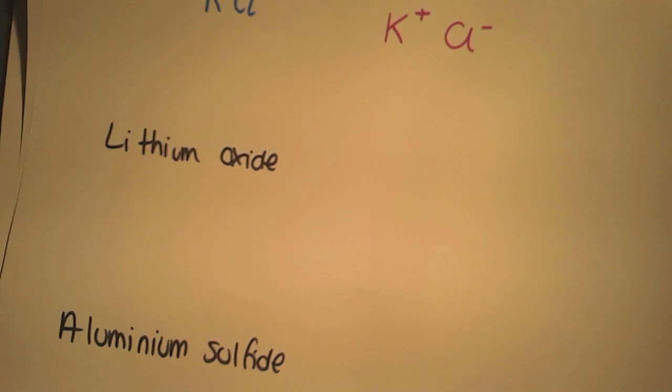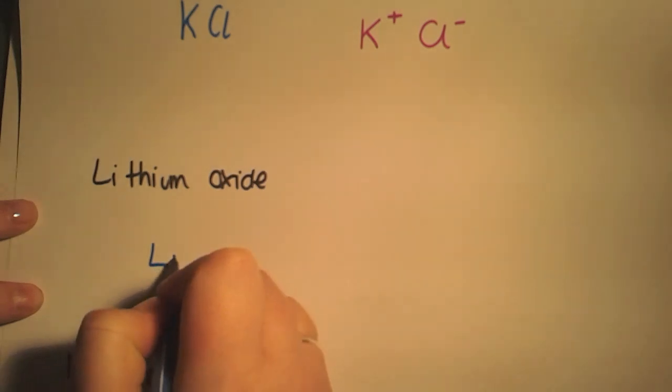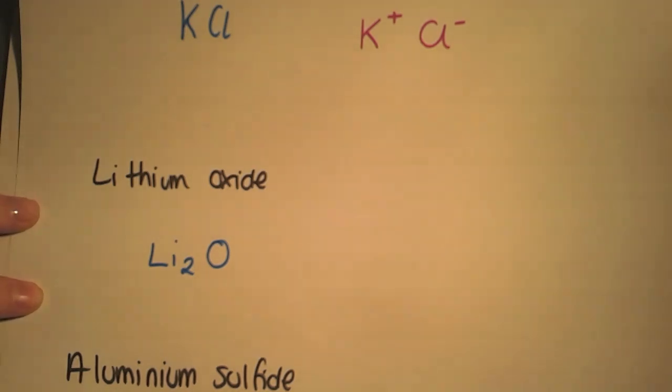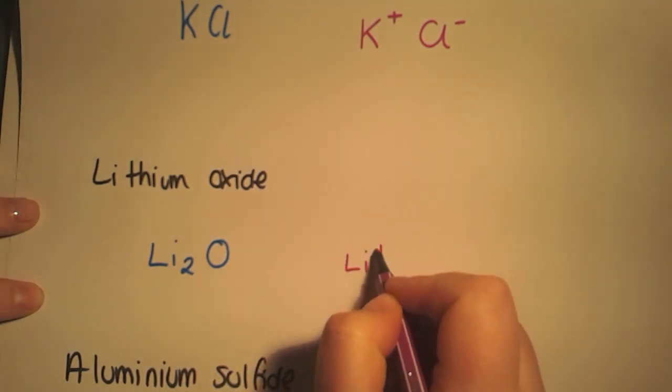Again, write the formulae as you would using valency, so for this you will have Li2O. And again, you're having a look at what elements you have. So we have lithium, a metal, the valency of one, so we'll have a charge of one positive.